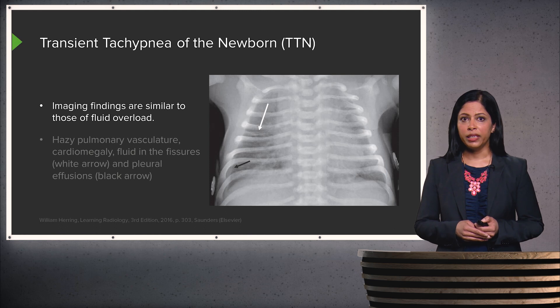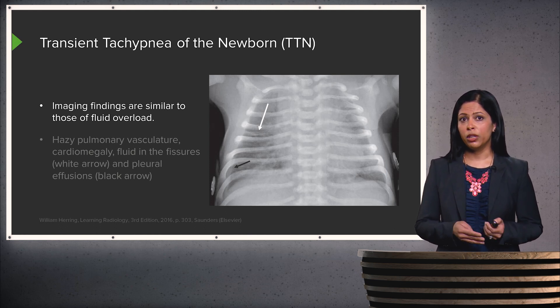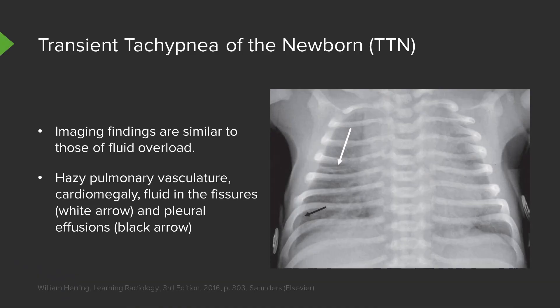Imaging findings are similar to that of fluid overload, appearing similar to pulmonary edema. You have hazy pulmonary vasculature — a ground glass appearance to the lungs. The heart looks enlarged, and you may have fluid in the fissures, as pointed out by the white arrow. You can also have small pleural effusions; there's a small one on the right pointed out by the black arrow. Both lungs have a hazy ground glass appearance, which is commonly seen.